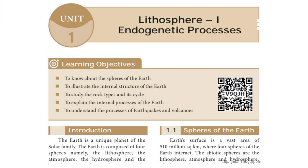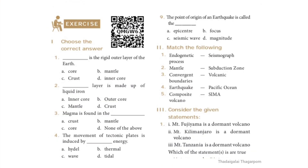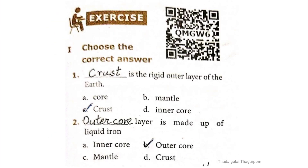9th standard Social Geography, Unit 1: Lithosphere 1, Endogenetic Processes. Book back exercise. Choose the correct answer. First one: the rigid outer layer of the earth. The correct answer is option C: Crust. Second one: which layer is made up of liquid iron? The correct answer is option B: Outer core.